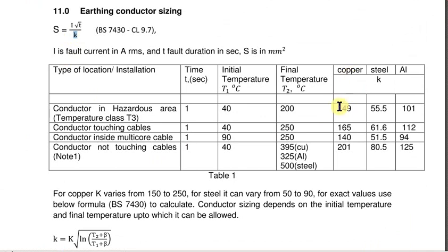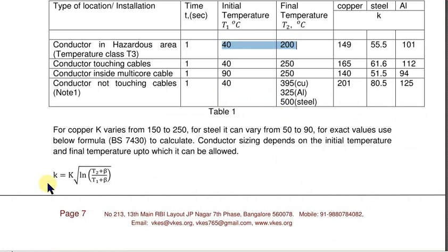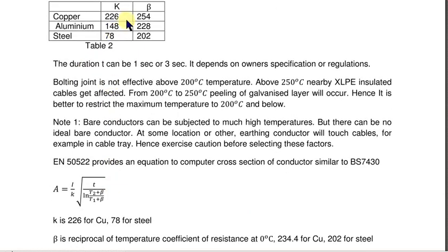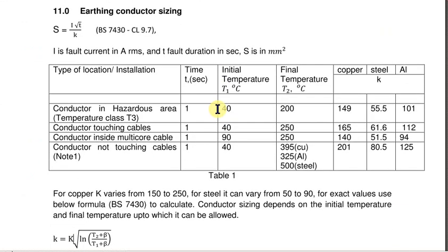Here this value of K you can directly take from the table. For copper you can take it as 149 and substitute here. For steel you can take it as 55 and substitute here. But if your temperature initial and final values are different, then please use this formula and determine the value of K based on this capital K and beta, which is given again in this table. This table is again taken from BS7430.